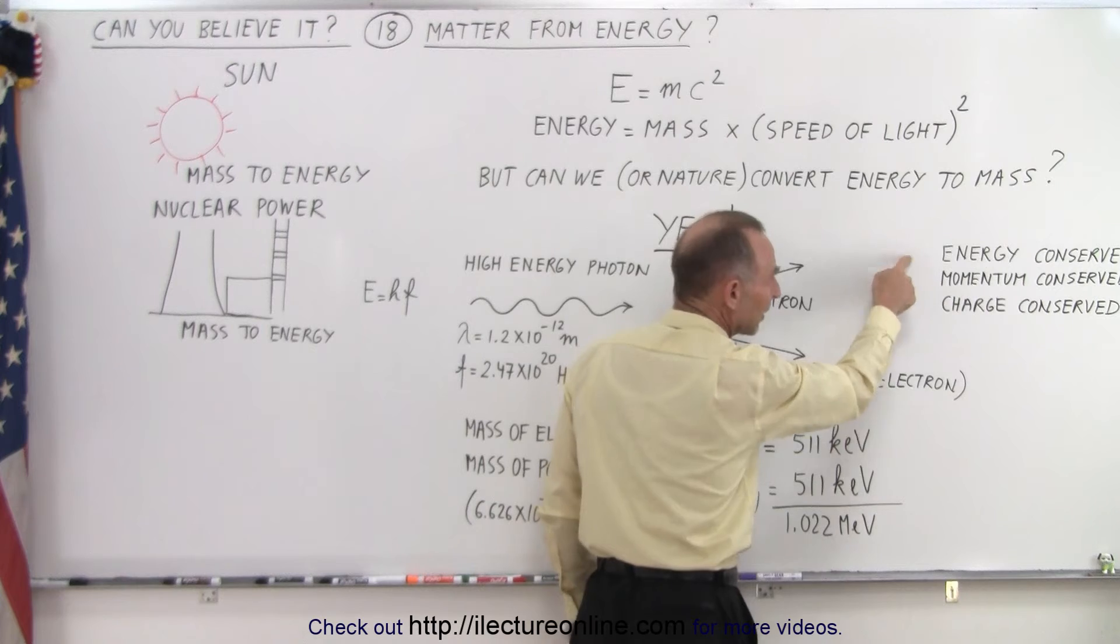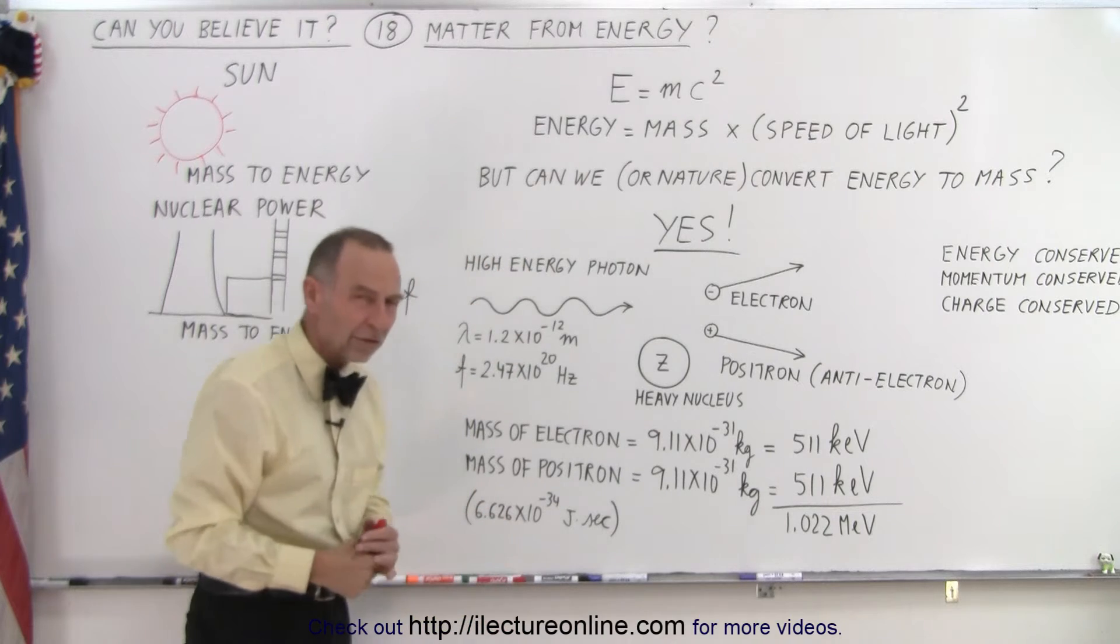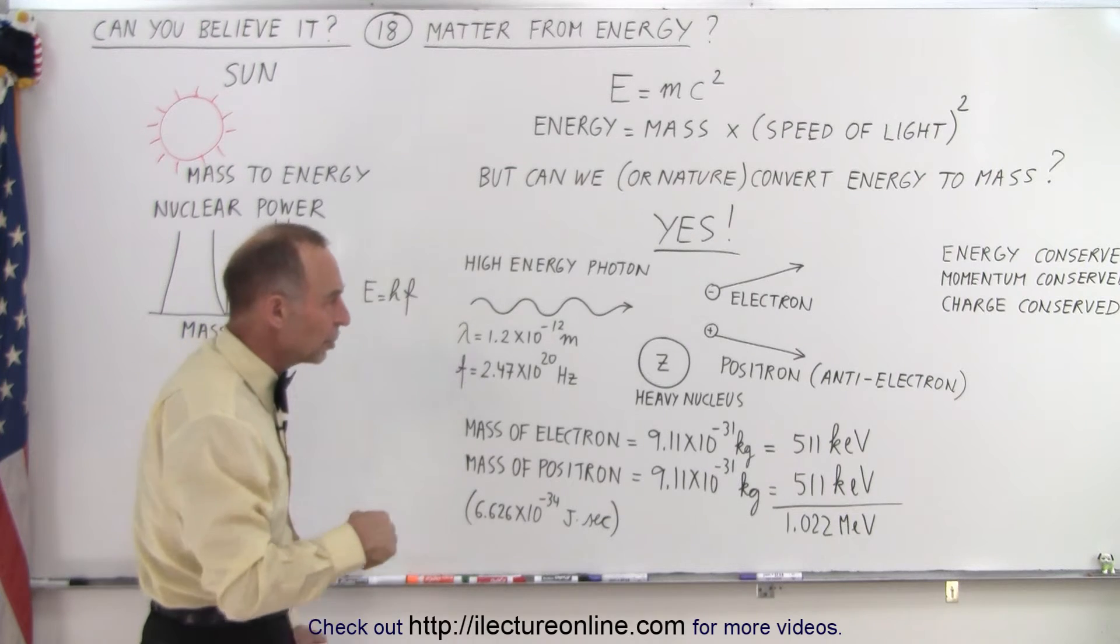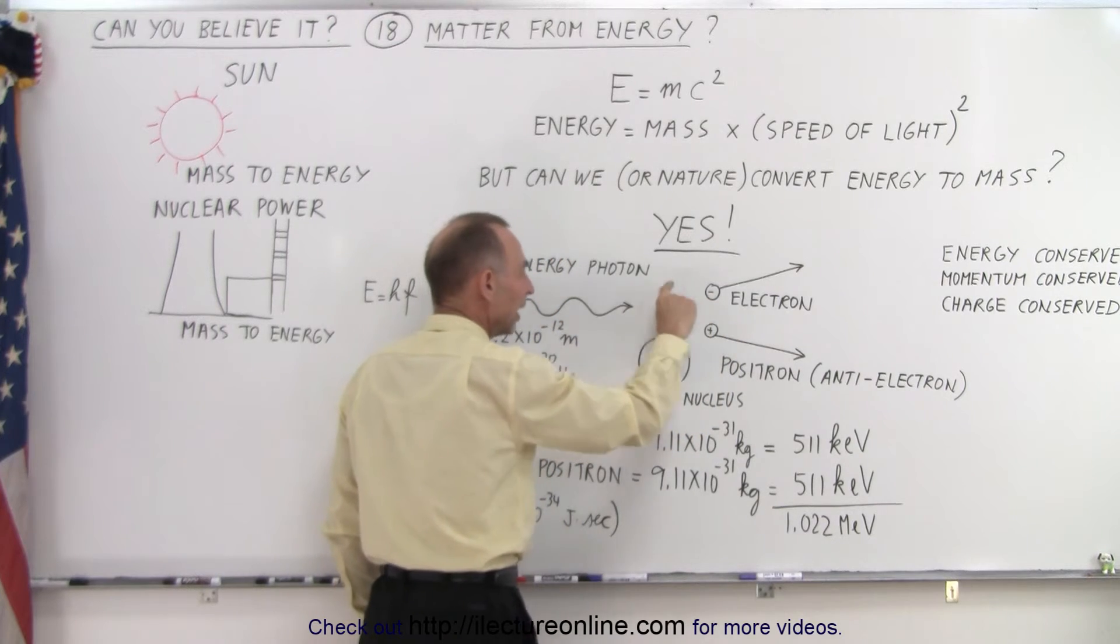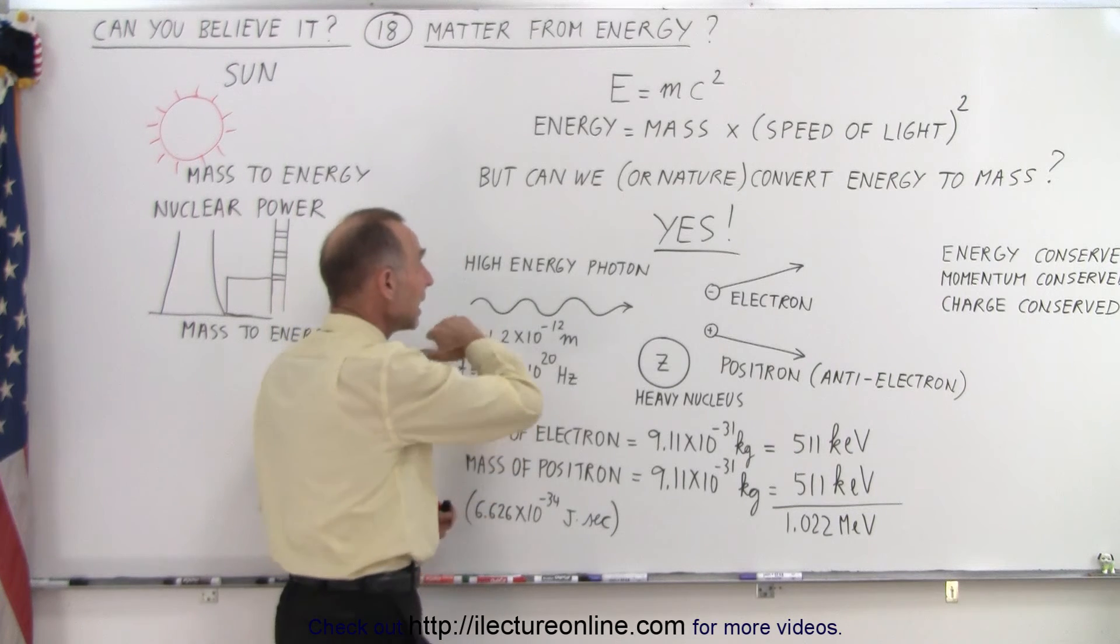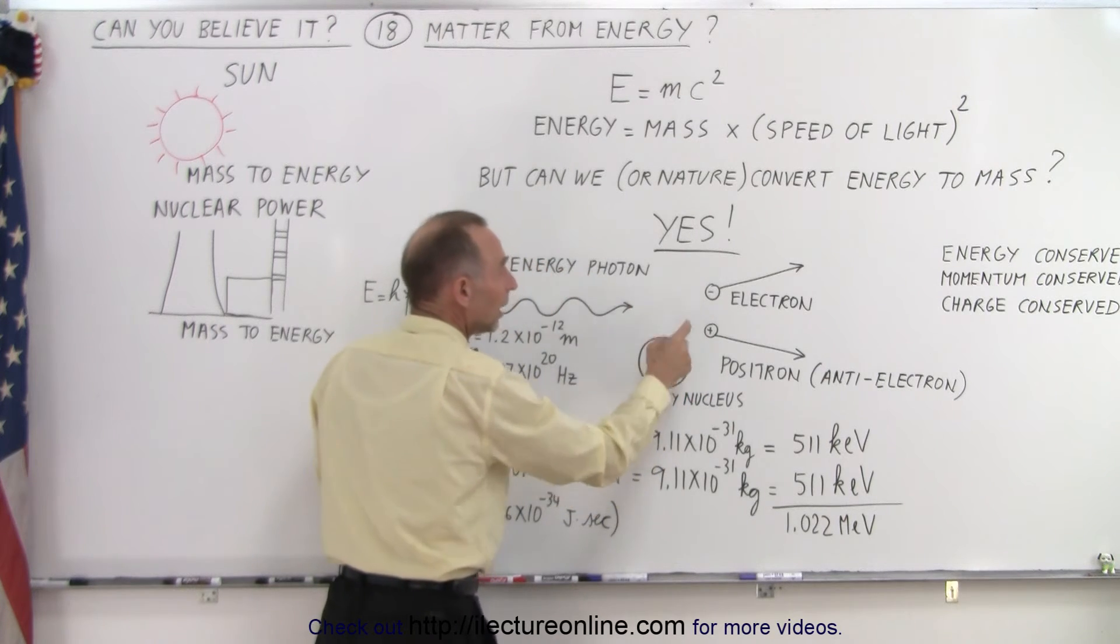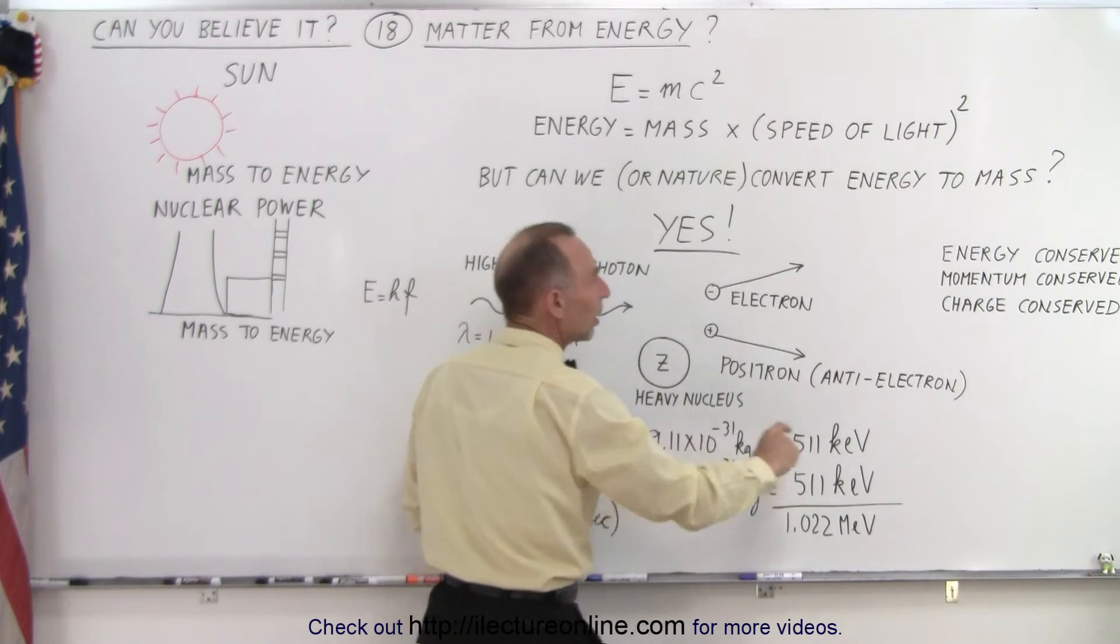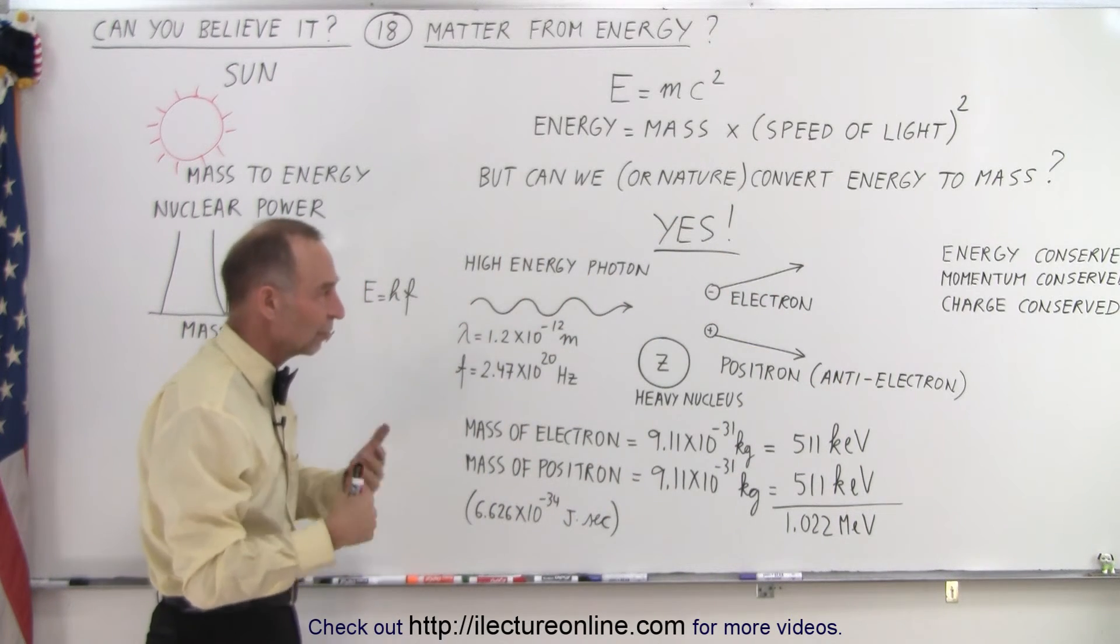And the reason for that is that different things need to be conserved. These are just some of them. Energy must be conserved, momentum must be conserved, charge must be conserved, and lepton number and other things such as that need to be conserved. But since energy and charge must be conserved, you need to produce two particles so that the charge can cancel out. So we have no charge here, and the sum of these two adds up to zero charge, so therefore charge is conserved. And the high energy photon, the gamma photon, needs to pass by heavy nucleus, which can then recoil, and somehow then, with the motion of the electron, the positron, and the heavy nucleus, can both conserve momentum and energy. Otherwise, it couldn't be done. So that's one of the necessary situations in which it can be done.